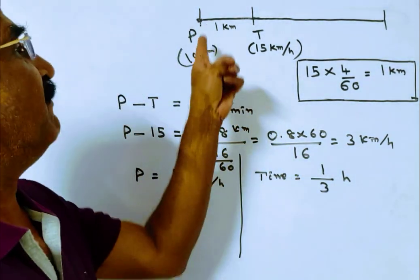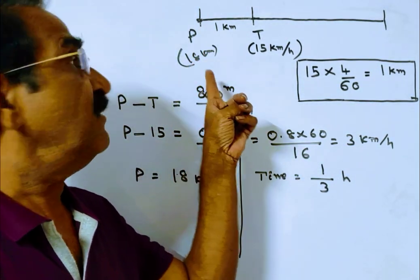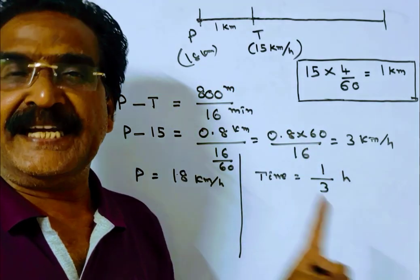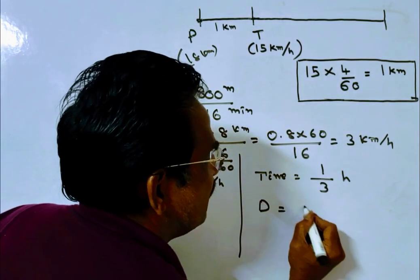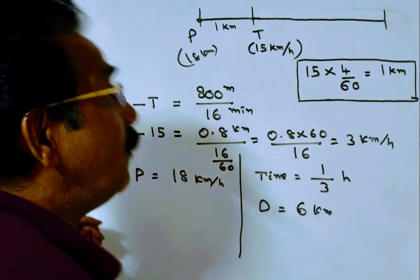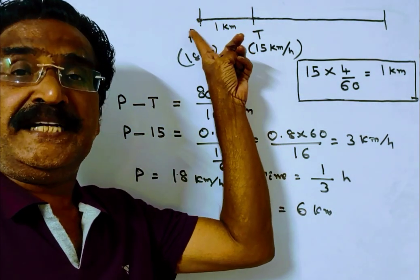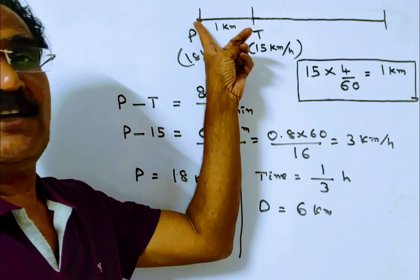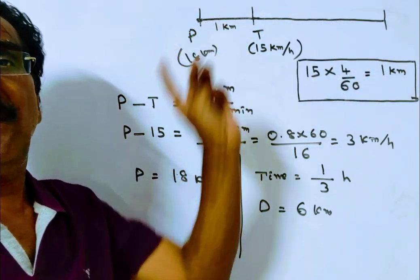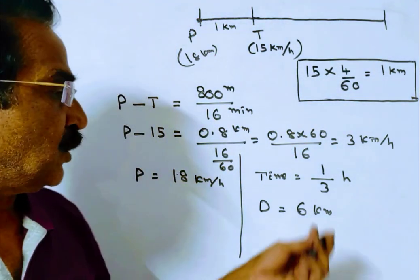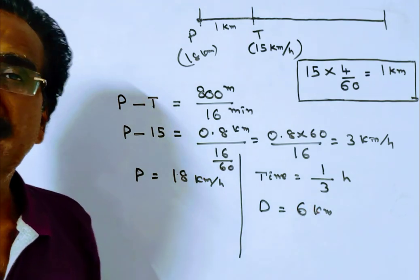In this 1/3 hour, the police travels 18 times 1/3, which equals 6 km. So from this point, 6 km away from this point, the thief will be caught. The distance is 6 km.